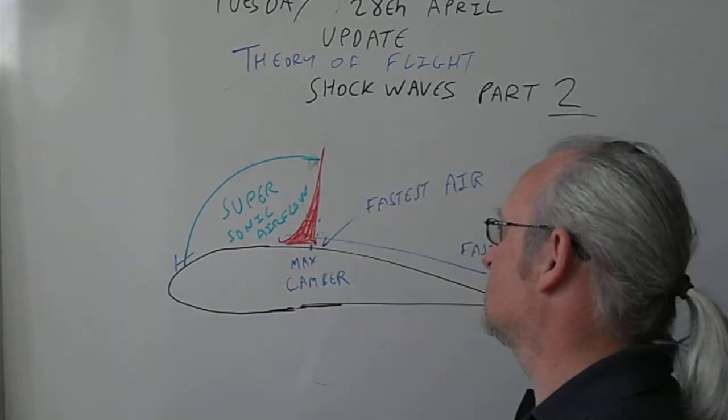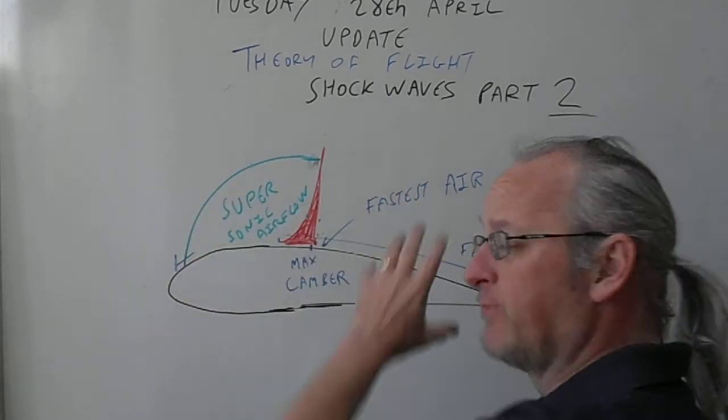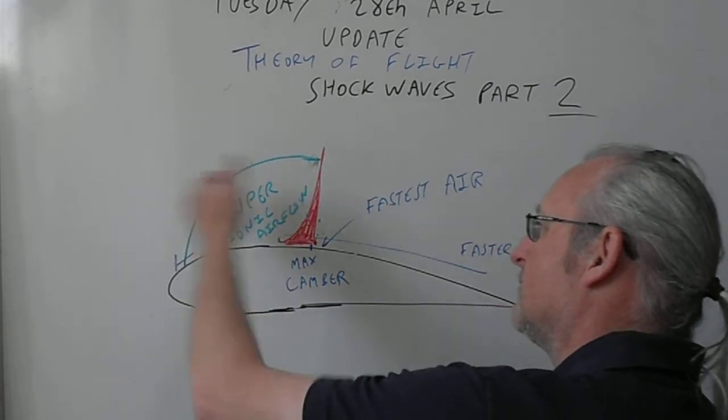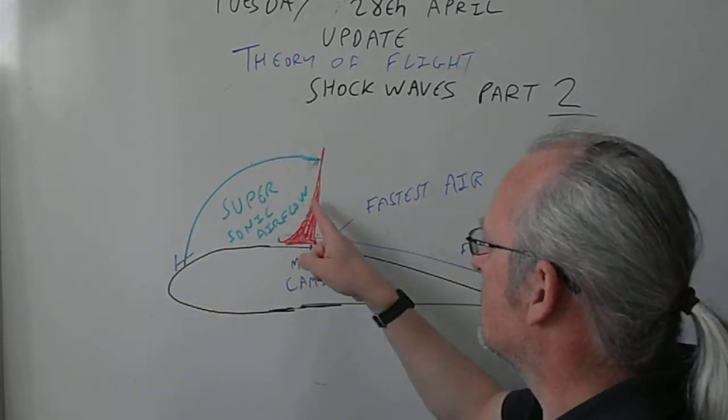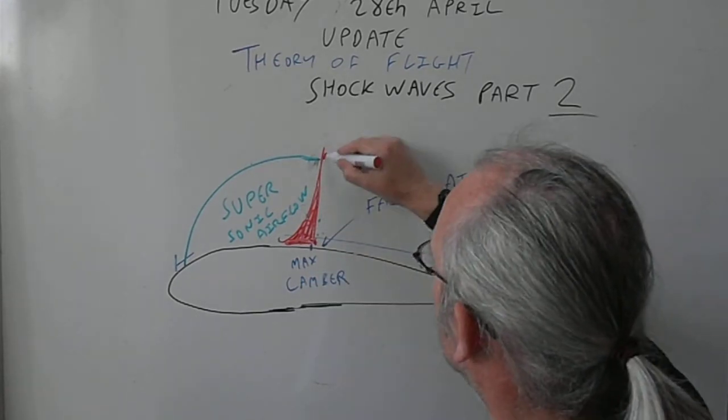What you find is before the maximum camber of the wing you'll find this bubble of supersonic airflow where the air is being accelerated faster than the speed of sound. And then it forms into this shock wave. So the red bit is the shock wave.